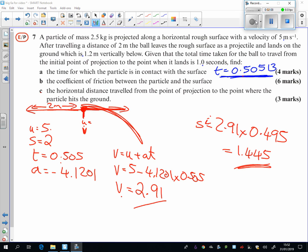The grand total journey is the 2 metres here plus that bit there. And so I've got 3.45 metres to 3 significant figures.